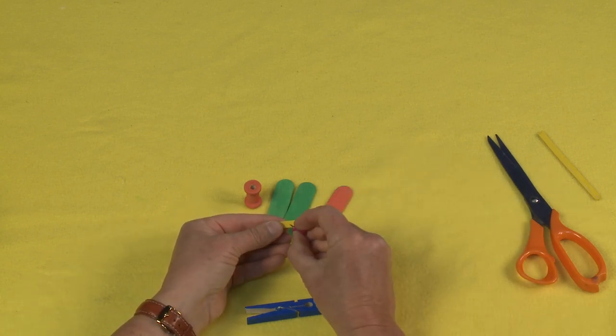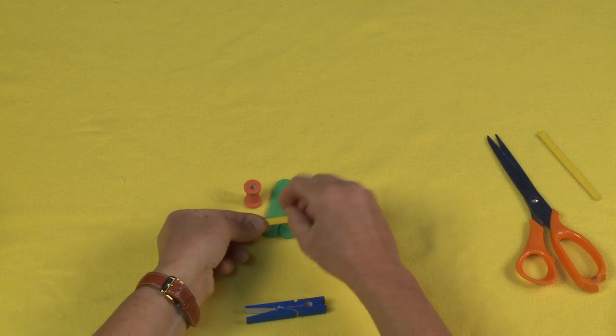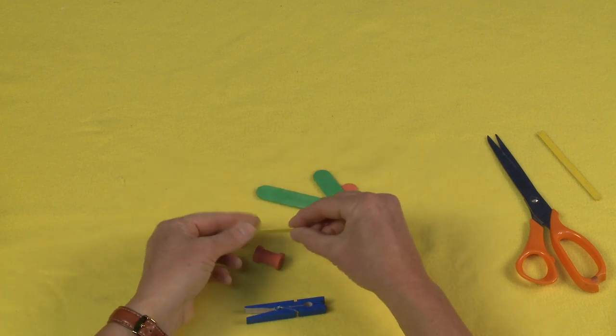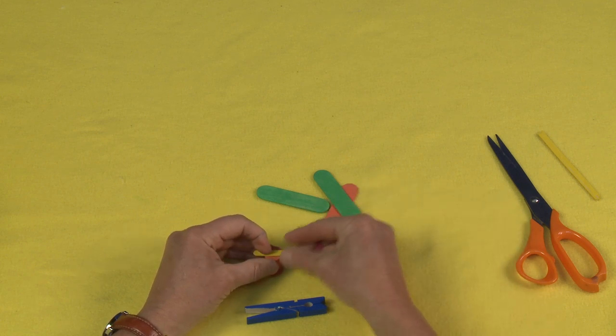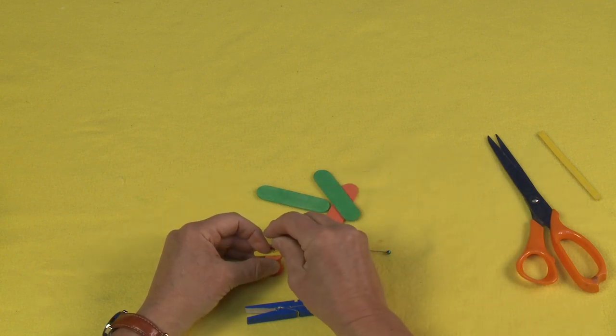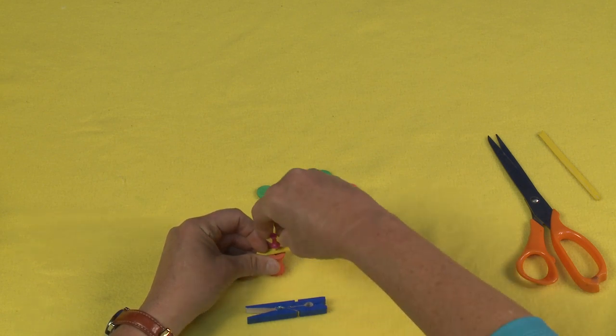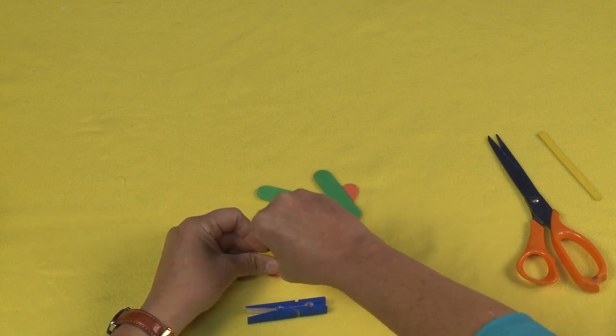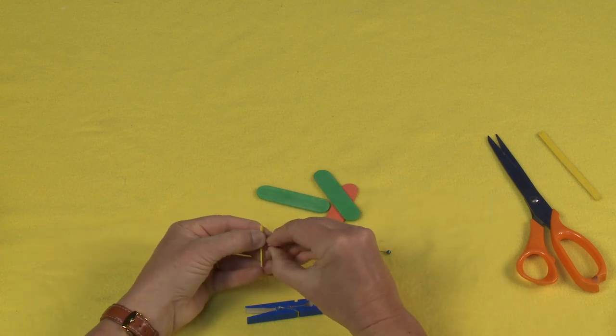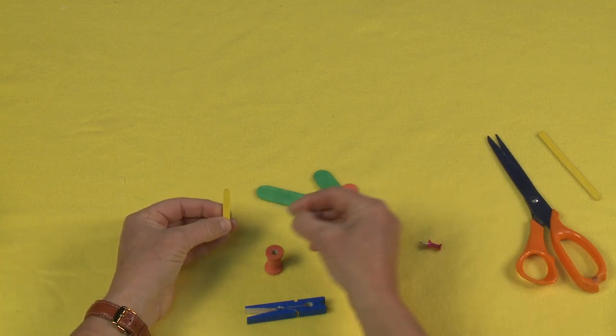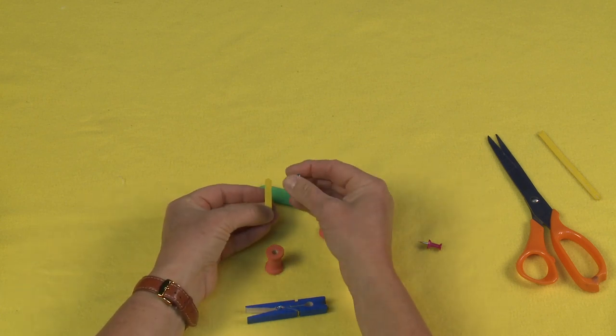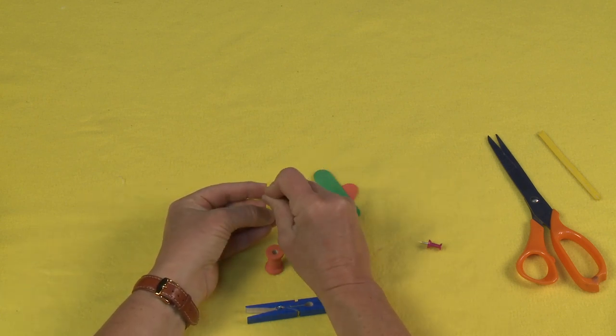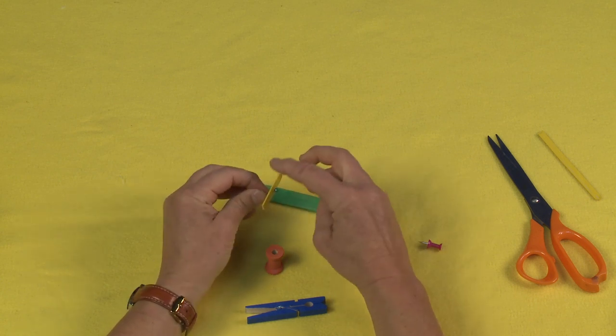You could use a ruler here if you wanted. I'm just going to use my spool, find the center and put a little hole right through the middle like that. Then I can put my pin through the hole that I just made and that'll make my propeller spin.